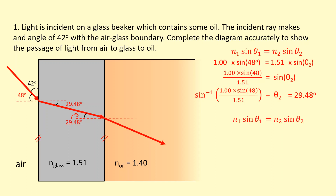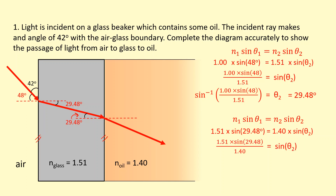Now we apply Snell's law at the glass-oil boundary. N1 is the refractive index of glass, 1.51, and the angle of incidence is 29.48 degrees. N2 is the refractive index of oil, 1.40, and sin theta 2 is what we're trying to find. Rearranging and taking sine inverse, we get an angle of refraction of 32.06 degrees.